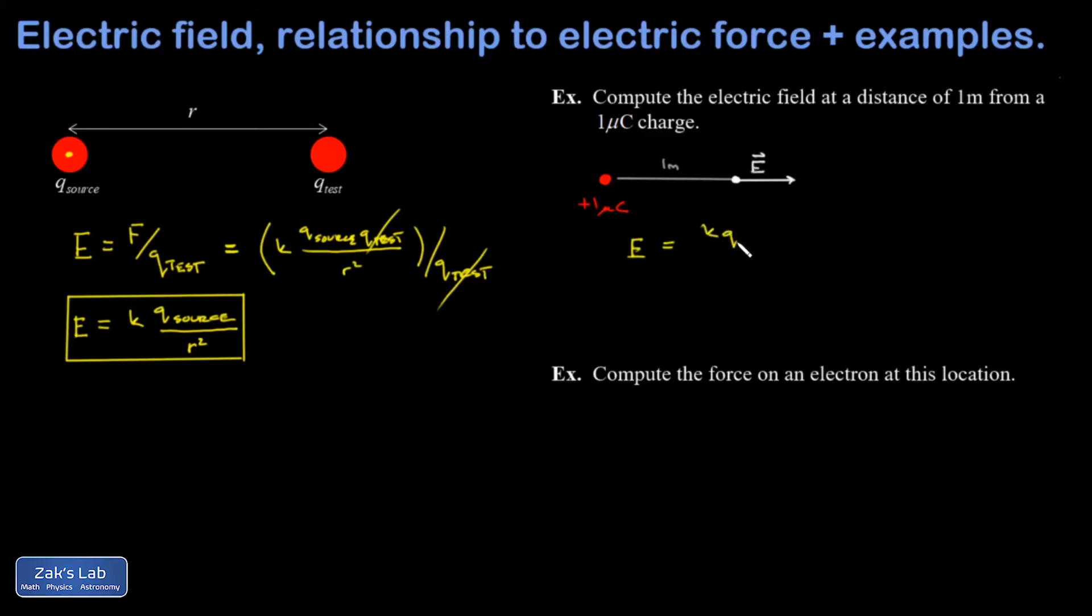The electric field generated by a point source is going to be K Q over R squared. And we plug in the numbers. The Coulomb's law constant is 8.99 times 10 to the ninth newton meter squared per Coulomb squared. The magnitude of our source charge is 1 microcoulomb, which is 10 to the negative 6 Coulombs. And the distance between the source charge and the point that we're interested in is 1 meter. And when I run the numbers, I get 8,990. And the units of electric field, again, that's units of force divided by units of charge. So that's newtons per Coulomb. Another way to describe this is that if you were to put 1 Coulomb of charge at that point, 1 meter away from our source charge, it would feel a force of 8,990 newtons.